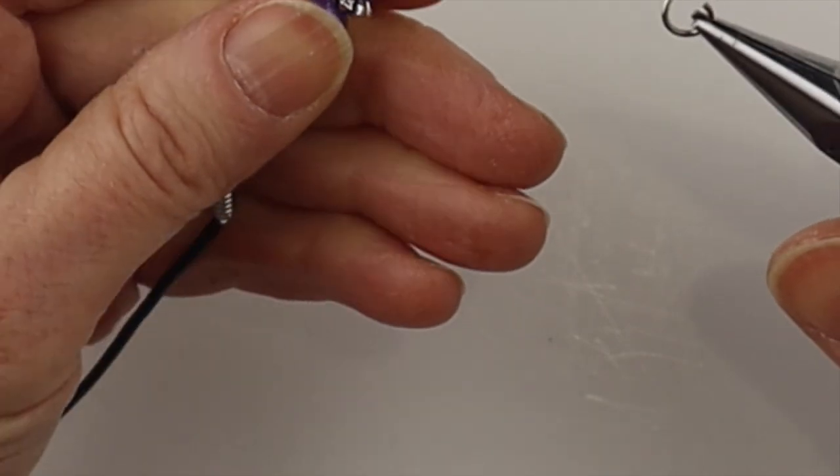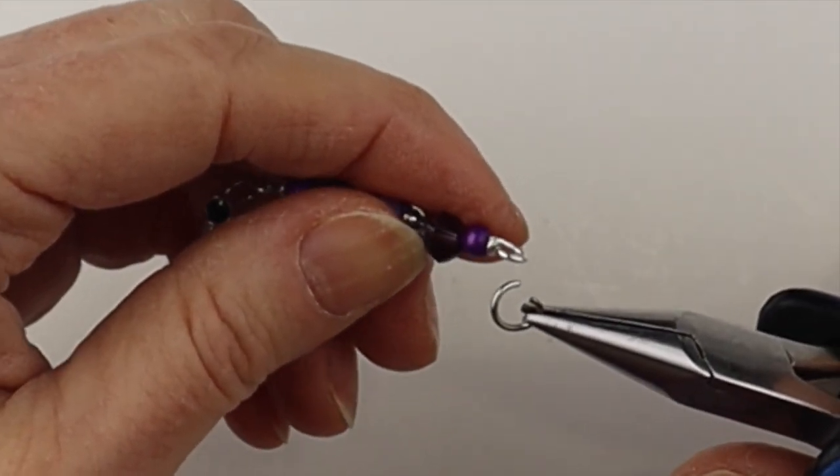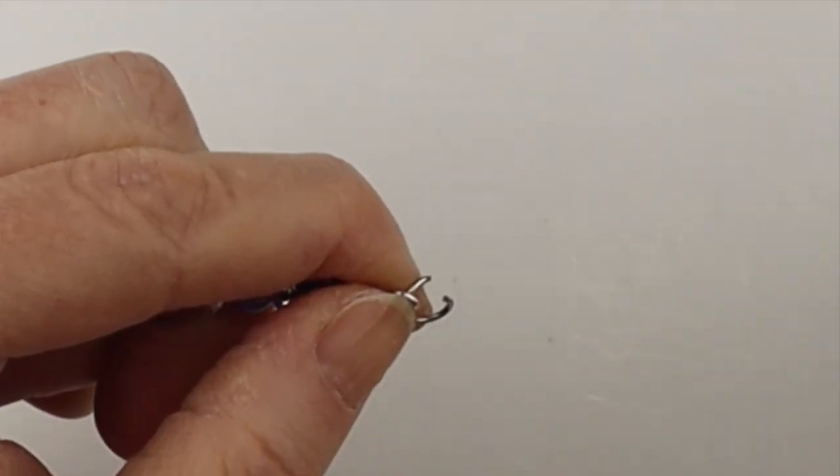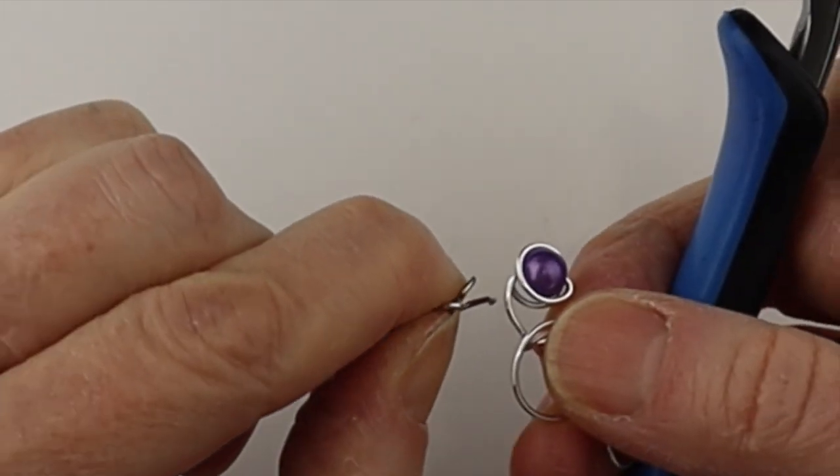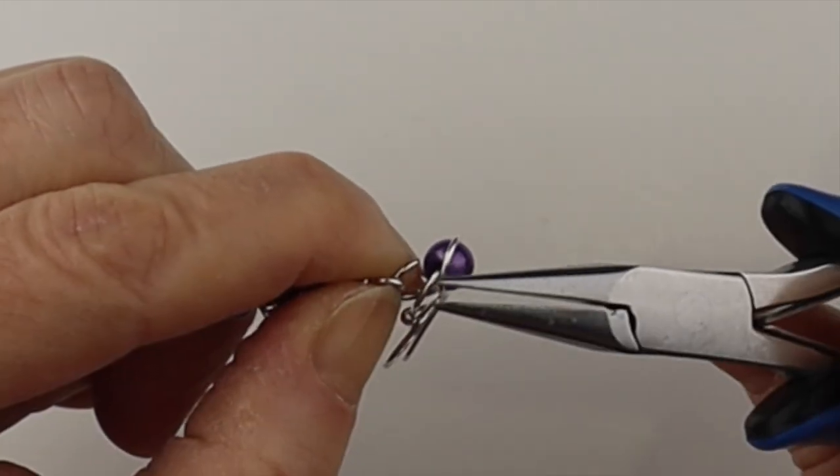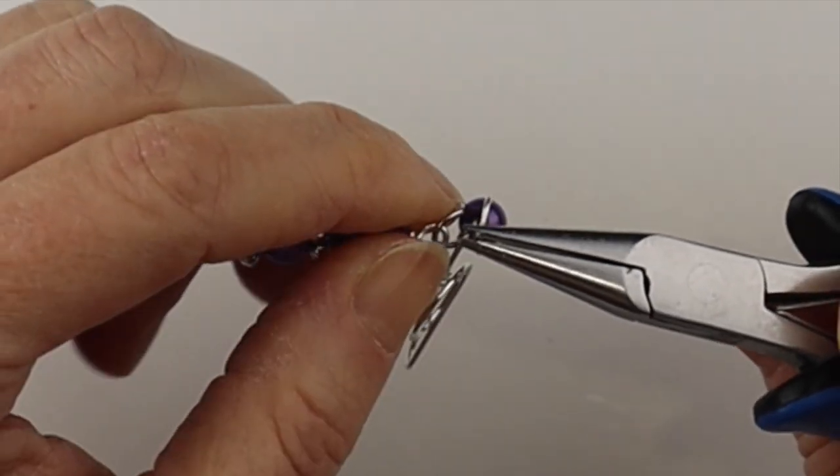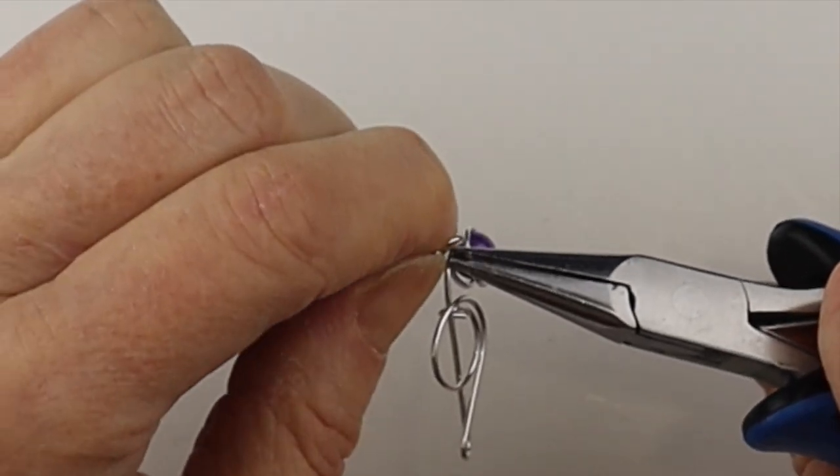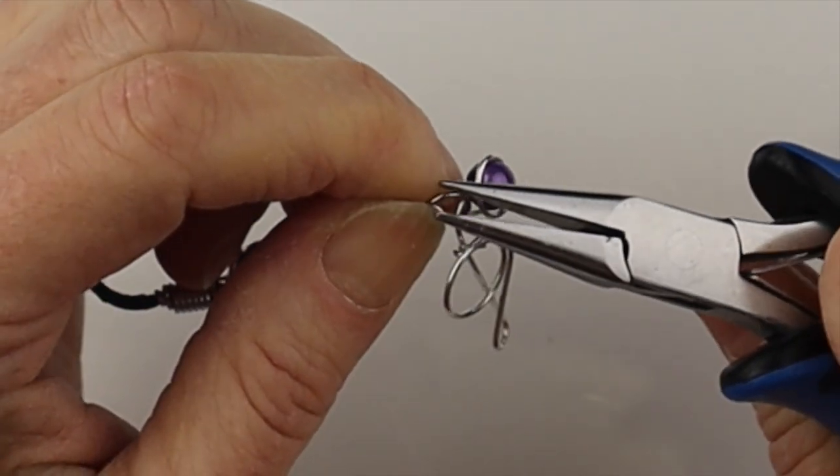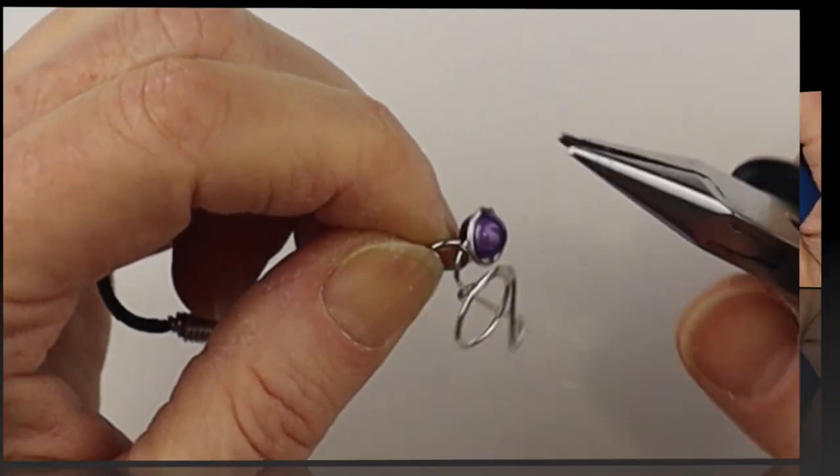And then we'll get another jump ring. Put it on the other end of the beaded connector and add our treble clef. So putting it in the bottom of the treble clef. Close up that jump ring.